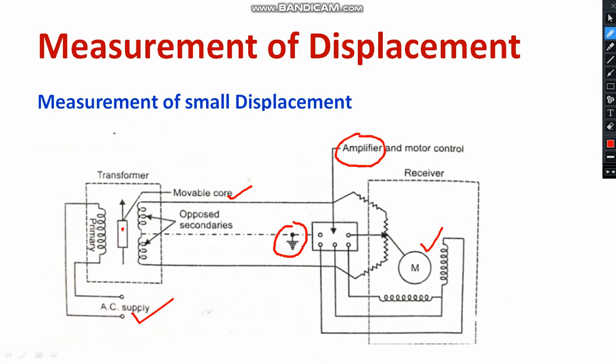How does it work? First and foremost, provide the suitable single-phase 230 volt, 50 hertz AC supply. The transformer works based on Faraday's laws of electromagnetic induction — specifically mutual induction. The movable core is directly connected with the object, and I wanted to measure the displacement of this object as it moves from point A to point B.